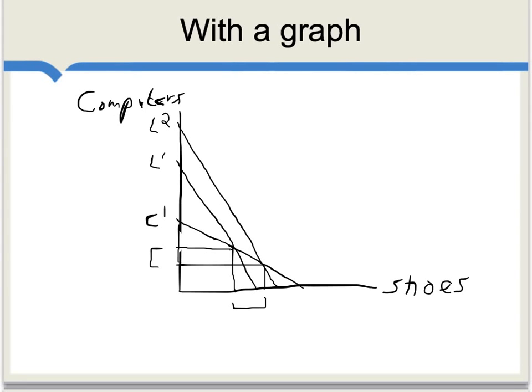Sometimes the theorem is presented graphically. On the vertical axis, we have the production of computers, which is the capital-intensive good. On the horizontal axis, we have the production of shoes, which is the labor-intensive good. We have two initial lines: L1, called the labor constraint, which tells you how outputs are constrained by the quantity of available labor, and C1, the capital constraint. Taking these together, the economy is at their intersection point, implying an output of computers and an output of shoes at those respective levels.